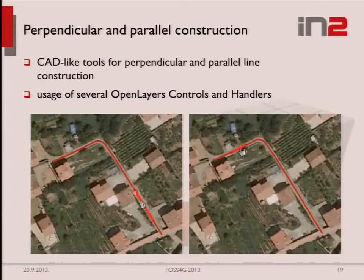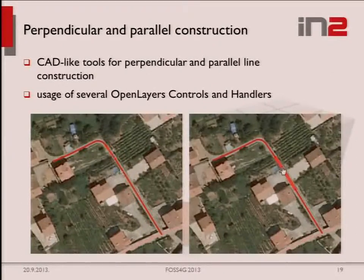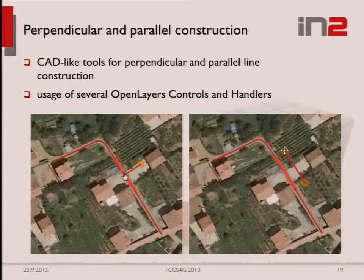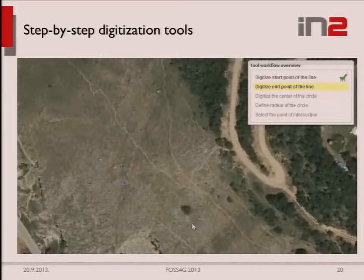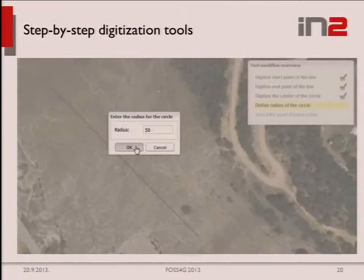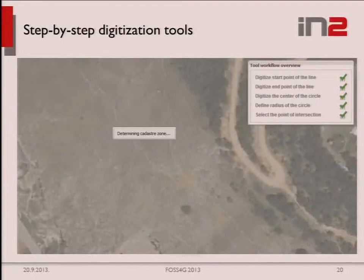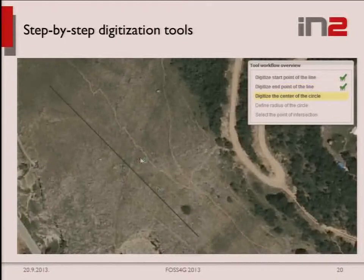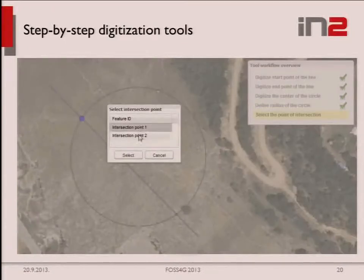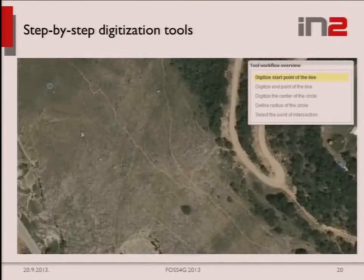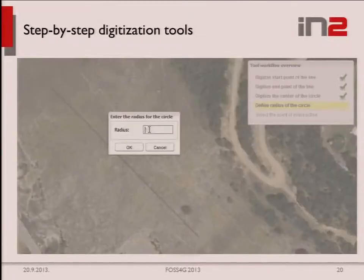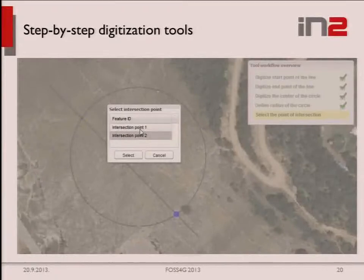We also built CAD-like tools for perpendicular and parallel construction. They first segment a line from point to point, then when you select the segment you want, they programmatically draw a parallel or perpendicular line that you can reshape by dragging. There is also a guided tool with five steps for digitizing a point at the intersection of a circle and a line: the user digitizes the start point of the line, the end point, the center of the circle, enters the radius, and then selects the appropriate intersection point.